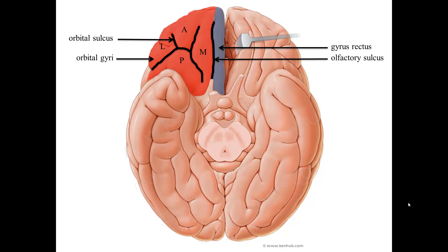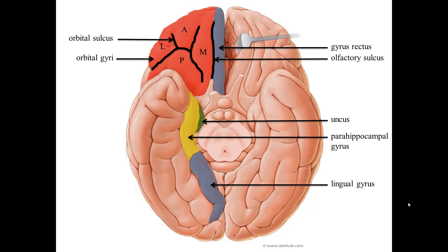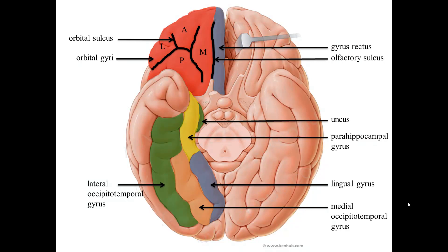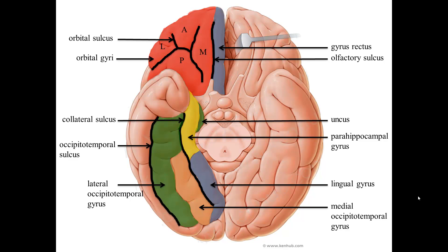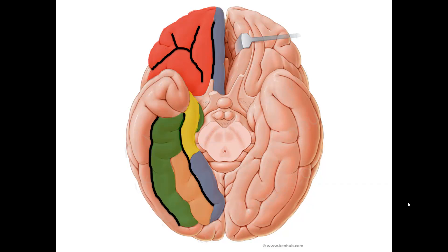Moving posteriorly, we first see the uncus, followed by the parahippocampal gyrus and the lingual gyrus. The parahippocampal and lingual gyri are separated from the medial occipital temporal gyrus and the lateral occipital temporal gyrus by the collateral sulcus. The lateral occipital temporal gyrus is separated from the inferior temporal gyrus by the occipital temporal sulcus. Here is a look at the highlighted inferior surface of the cerebrum without labels.